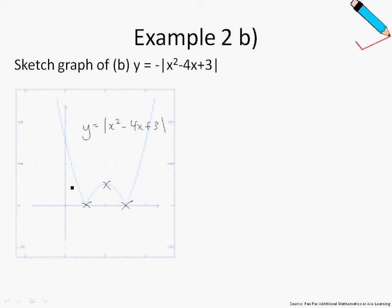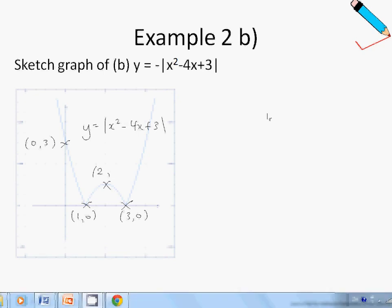This point is 0, 3. This point is 1, 0. This point is 3, 0. And this point is 2, 1.